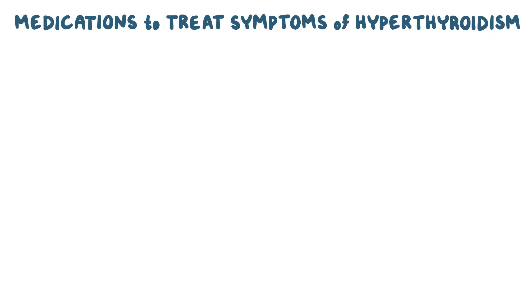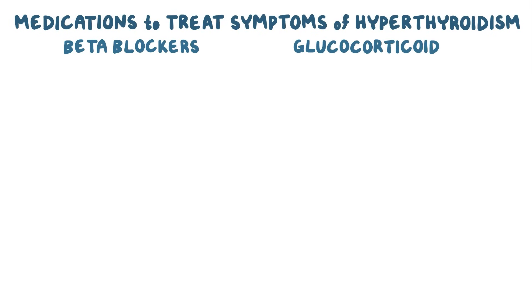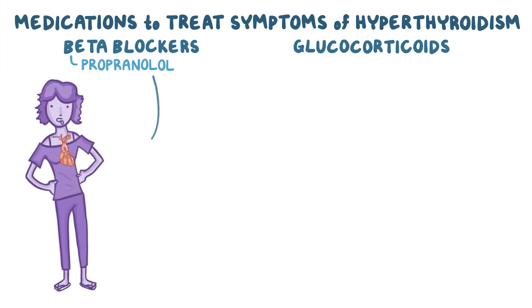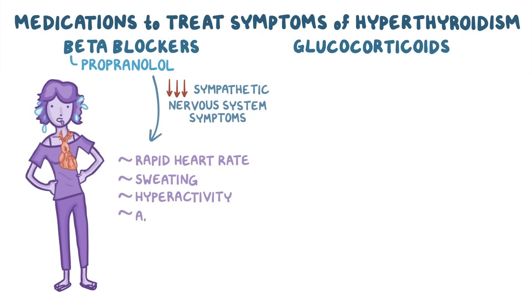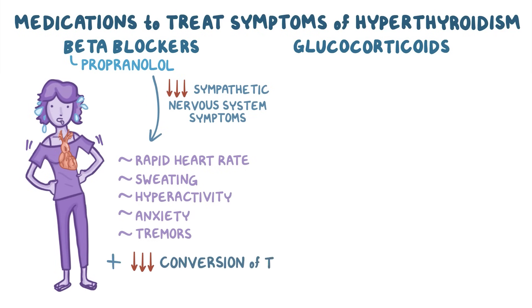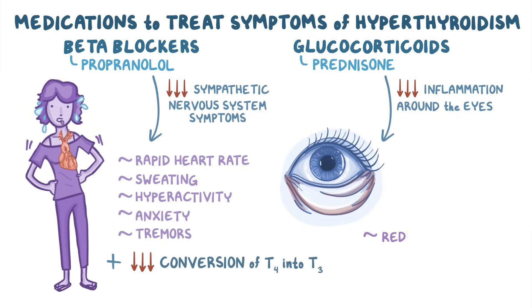Finally, we have medications that are used to treat symptoms of hyperthyroidism, and they include beta blockers and glucocorticoids. Beta blockers, like propranolol, are used to block beta receptors in tissue innervated by the sympathetic nervous system. This could reduce sympathetic symptoms of hyperthyroidism like rapid heart rate, sweating, hyperactivity, anxiety, and tremors. In addition, propranolol decreases the conversion of T4 into T3, just like PTU, and could be used during thyroid storms. Glucocorticoids, like prednisone, can decrease the inflammation around the eyes and are used to reduce Graves' ophthalmopathy before radioactive iodine could be given.